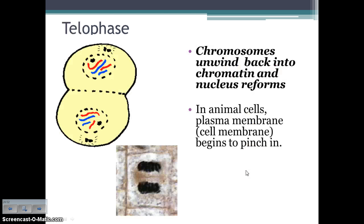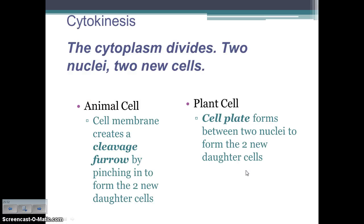In telophase, basically whatever happened in prophase gets undone. The nucleus that was disappearing in prophase reappears in telophase. The chromosomes that were forming in prophase unwind back into chromatin. In animal cells, the cell membrane starts to pinch in, which leads into cytokinesis.